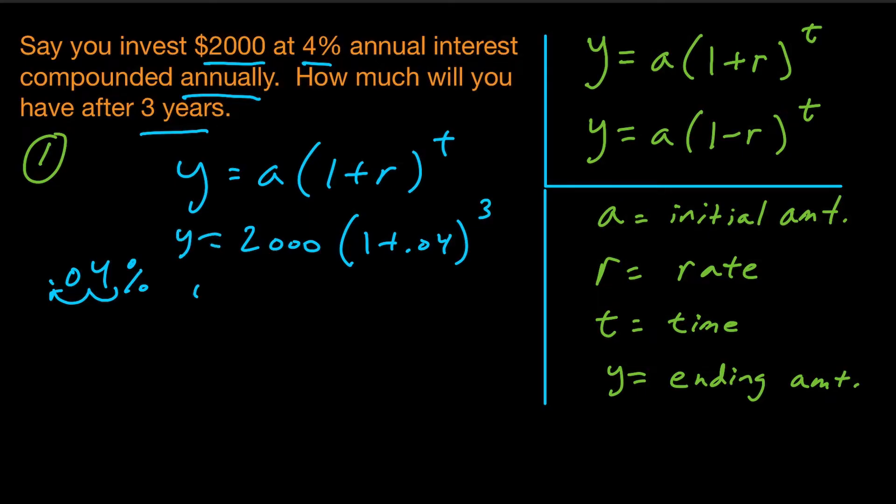So if we simplify a little bit, we get y equals 2,000, 1.04 to the third. Notice this base here is greater than 1, which means that this is going to be an exponential growth function. It's going to grow, it's going to get larger and larger as time continues on.